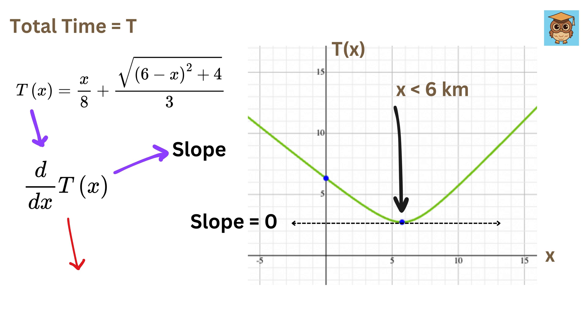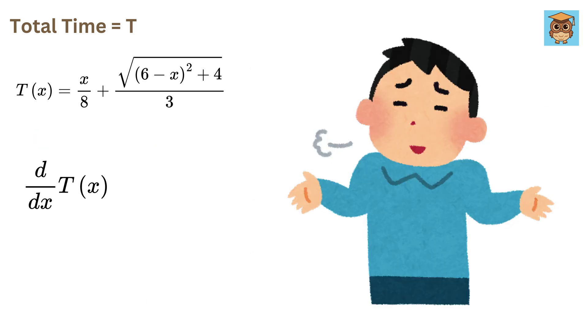Therefore, when we take the derivative of T of X with respect to X, equate it to zero, and then solve for X, we get the value of X where this time is minimum, or this point on the curve. This is the main idea behind any optimization problem. Make a function with respect to a variable, and then set the derivative of that function equal to zero.